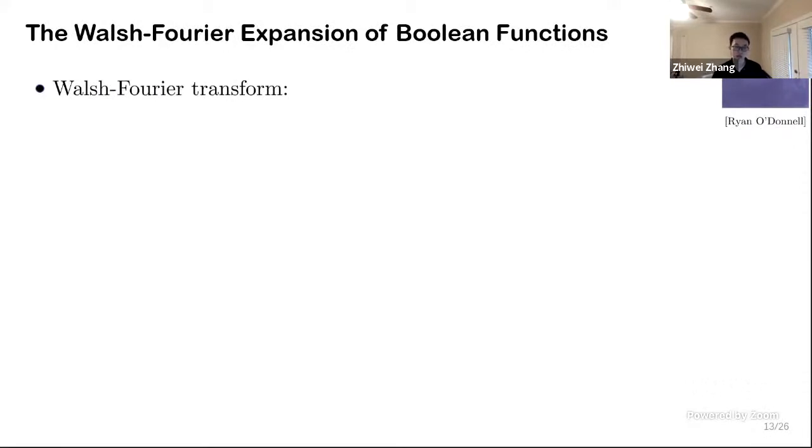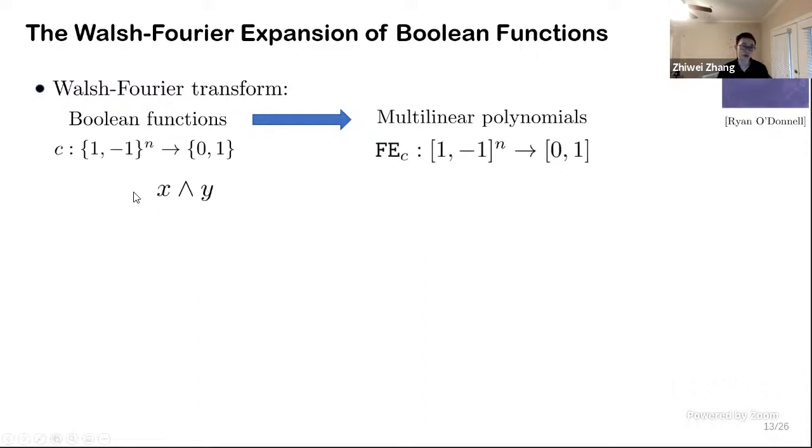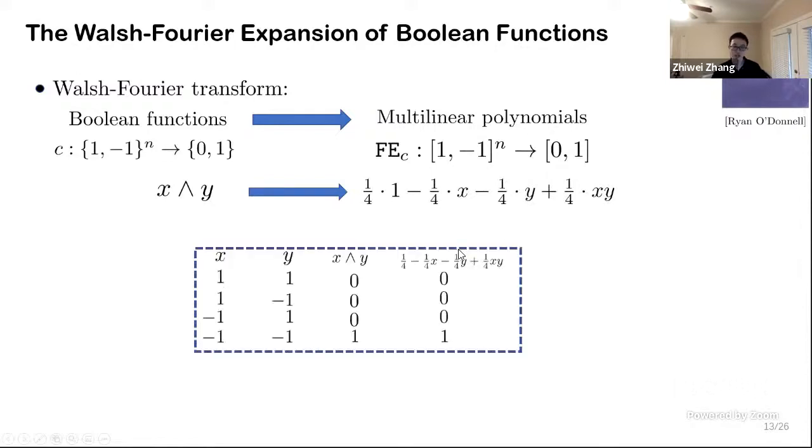The Walsh-Fourier expansion is the main theoretical technique we are using in our framework. Ryan has written a remarkable textbook on this topic, I will just give a brief introduction. It is basically a technique which transforms Boolean functions to multilinear polynomials. For example, if the formula is x and y, then I will claim that this polynomial is the Fourier expansion. The reason is if you evaluate this polynomial on all the four possible discrete assignments, you will see that the Boolean function and the polynomial agree with each other.